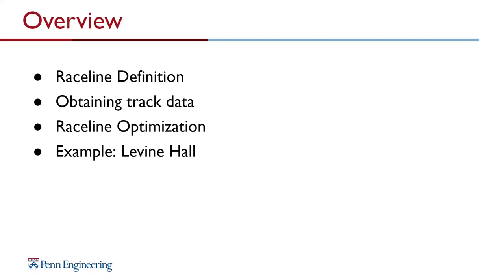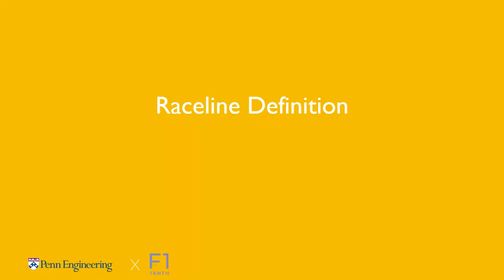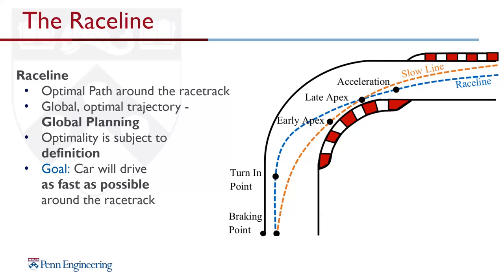The first thing we're doing is: what is a race line? When you watch Formula One, you see the car is not driving on the far left, not on the far right, and not even in the center — it's driving a special line we call the race line. By definition, it is the fastest line around the track. How you achieve being the fastest car around the track is up to you.